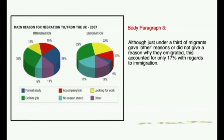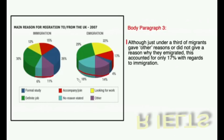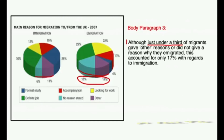In the final body paragraph, 'no reason stated' and 'other' are discussed. Although just under a third of migrants gave other reasons or did not give a reason why they emigrated — these figures are joined together, coming to 32%, which is just under a third. However, this only accounted for 17% with regards to immigration.